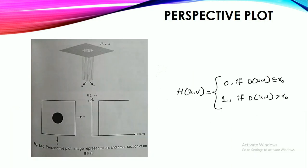So here is the transfer function of this ideal high pass filter, which is given as H(u,v) = 0 if D(u,v) < R₀ and H(u,v) = 1 if D(u,v) > R₀, where R₀ is the cutoff frequency and D(u,v) is the distance measured from the origin.